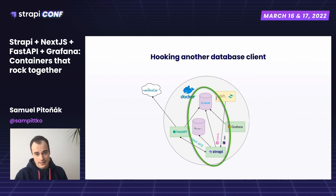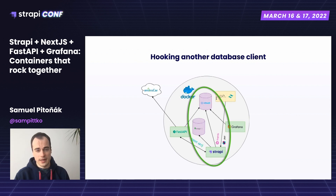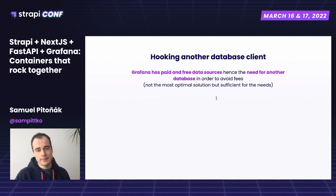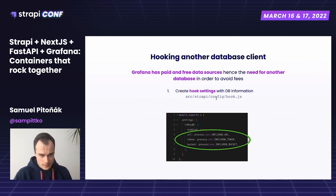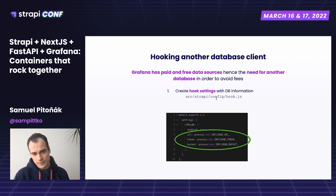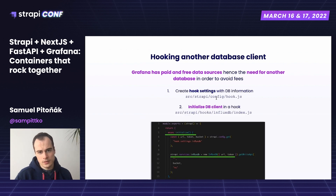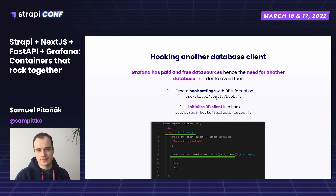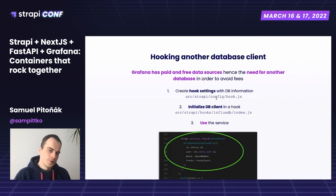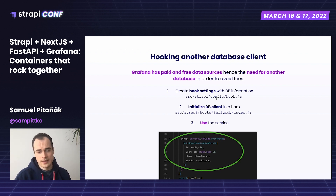Last but not least, another use case of Strapi in my architecture was to hook another database client to the global Strapi context. Grafana has paid and free data sources, so I needed another database to avoid fees. That was easy to do thanks to hooks: you create a config for the hook, enable it, initialize the database client inside an initializer function that fires once Strapi starts up, and then use the service through the Strapi global context to write new data points into the database.